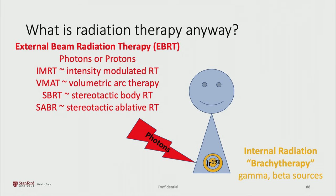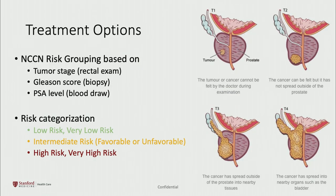Treatment options for prostate cancer are mostly determined by your risk grouping. We typically use the NCCN — the National Comprehensive Cancer Network — defined risk groups, which are based on clinical features to predict aggressiveness: tumor stage based on rectal exam, Gleason score based on biopsy, and PSA or prostate specific antigen level in the blood. The risk categories are broken down into three main groups: low risk, intermediate risk, and high risk.